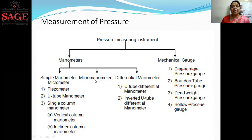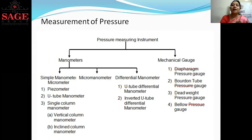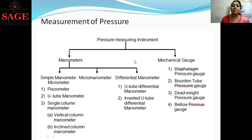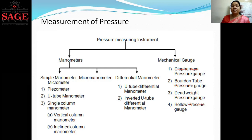In the simple and micro manometer, we find the pressure value at a single point — one end is connected to the pipe whose pressure we need to measure, and the other end is open to the atmosphere. But in the differential manometer, there are two points, and we find the difference in pressure between those two points.